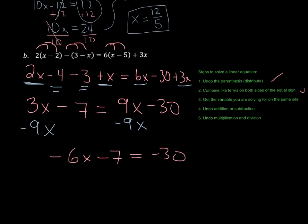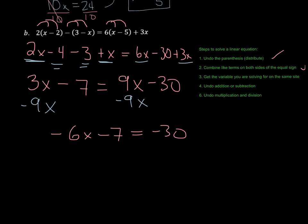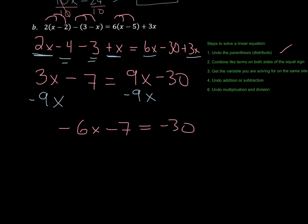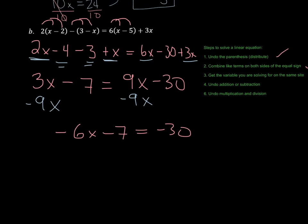And now I'm going to move down to give myself a little bit more room. After we undo the parentheses, combine like terms, get the variable you're solving for on the same side. Sorry, that should say side, not site. Cross that out. Fix that. Sorry about that. Now we undo any addition or subtraction. So I'm going to add 7 to both sides. And we get negative 6x equals negative 30 plus 7. That's going to give us a negative 23.